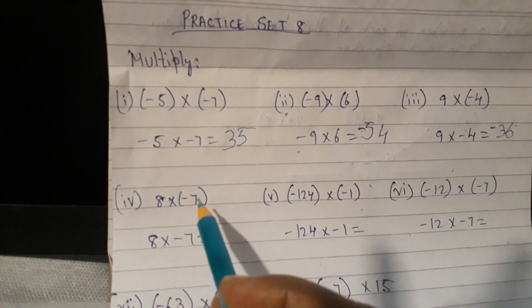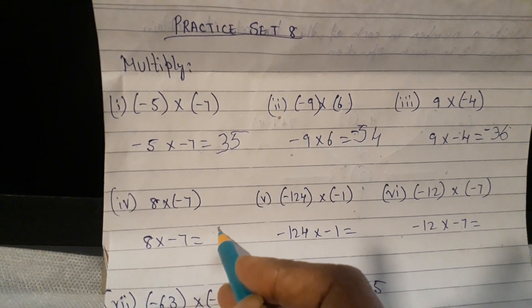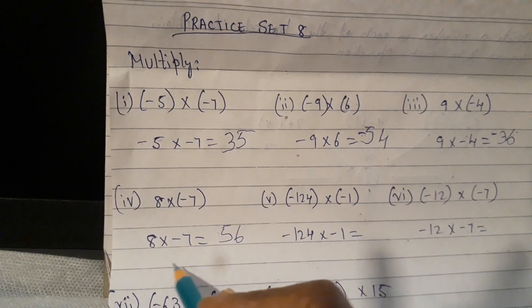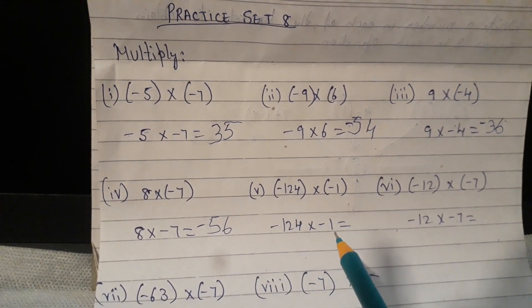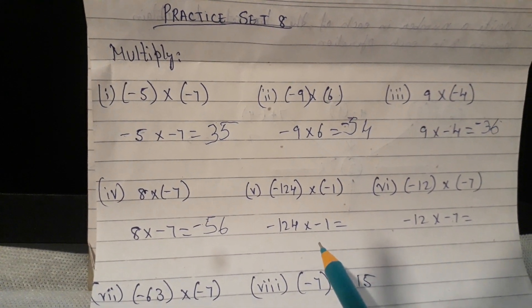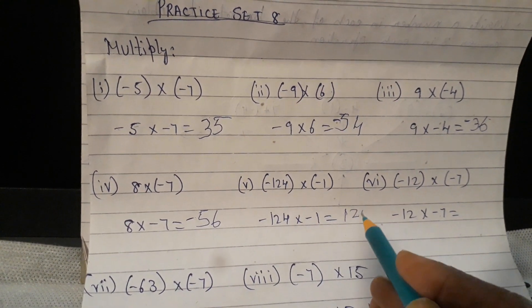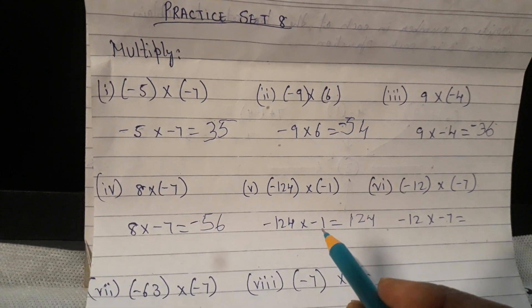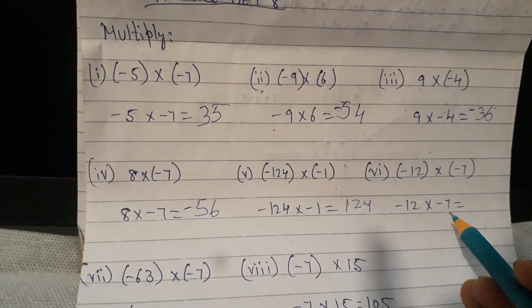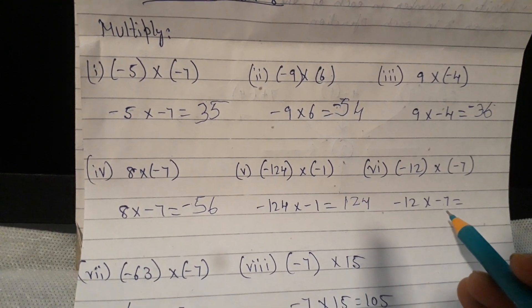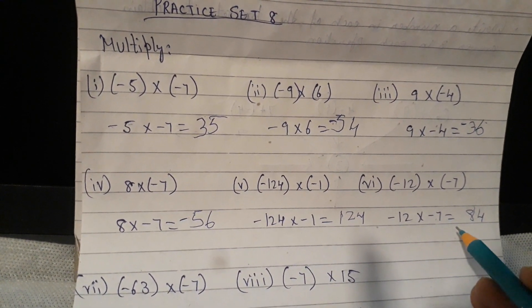Next one, 8 into minus 7. 8 into minus 7. 8 7's are, yes, that's right, 56. Plus into minus, minus. Minus 124 into minus 1. Oh my God, this is such a big number. Not at all, 124 into 1, that means self. So we'll give 124 or 124. Minus into minus, plus. Sixth one, minus 12 into minus 7. Minus 12 into minus 7 will give me how much? Yes, that's right. 12 7's are 84. Minus into minus, plus.